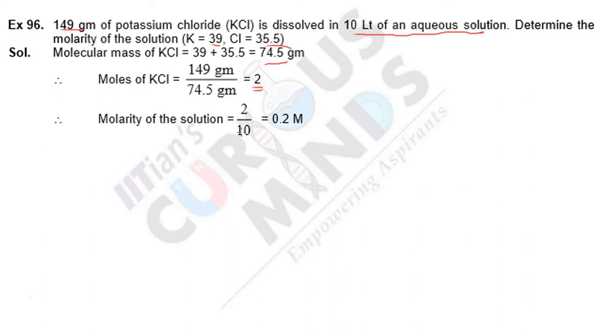2 divided by 10 equals 0.2 M. So this is the molarity of the solution, meaning 1 liter of this aqueous solution has 0.2 moles of potassium chloride. Hope you guys understood this video, thanks for watching.